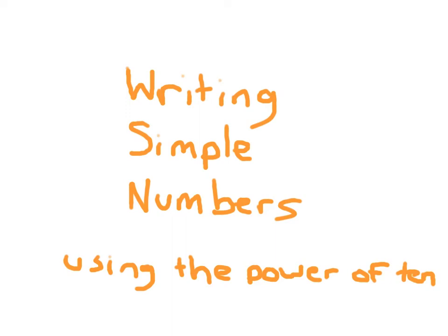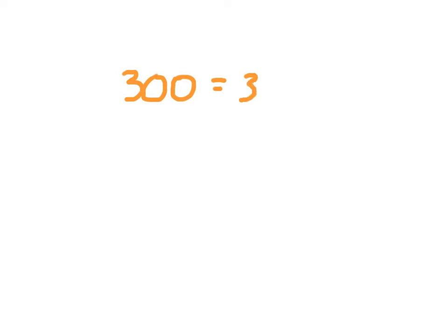Let's look at writing some simple numbers using the power of 10. Let's start by looking at how we would break apart 300 as a power of 10. 300 can be broken down as 3 times 100, and 100 as a power of 10 is written as 10 squared. So 300 is just 3 times 10 squared.